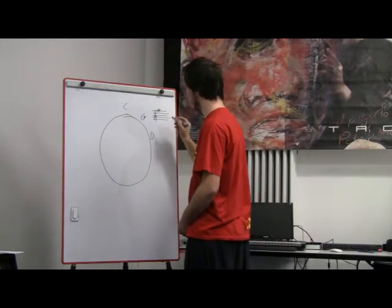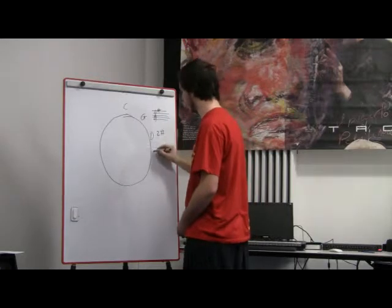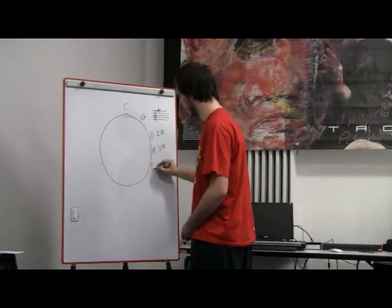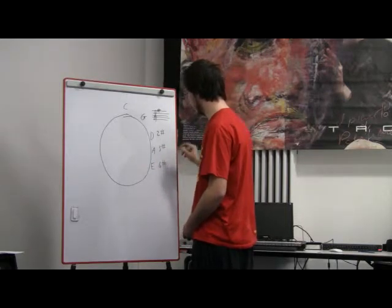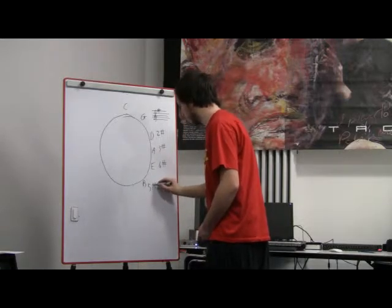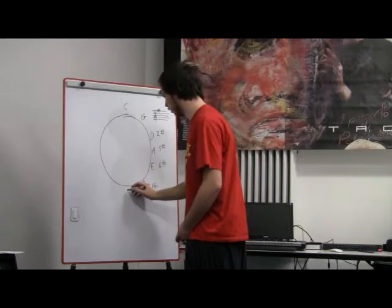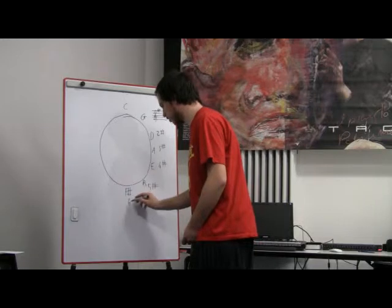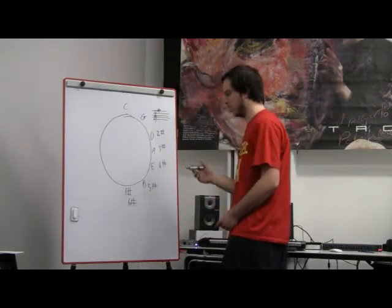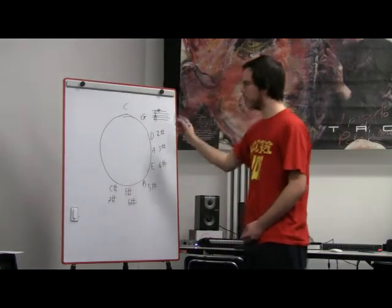It's usually written like this. We have F sharp. Then we have the D, which has two sharps, the F and the C. Then we have the A, with three sharps, the F, the C, and the G. Then we have the E with four sharps. Then we have the B major, with five sharps: F, C, G, D, and A. Then we get to the F sharp, with six sharps. Then we get to the C sharp, which has seven sharps.